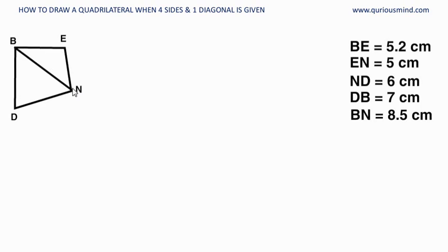All the three sides are given. BE given, EN given, BN given, so we can draw BEN. Similarly BN given, BD given, DN given, we can draw triangle BDN and that gives us the quadrilateral BEND. And hence what we'll do is we will draw the diagonal first.